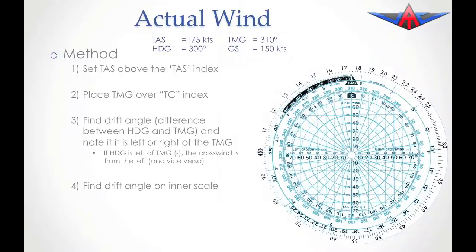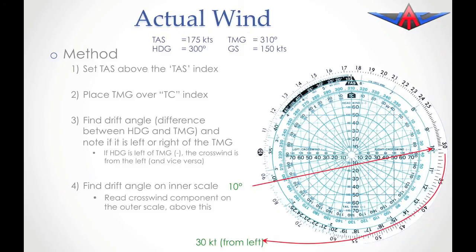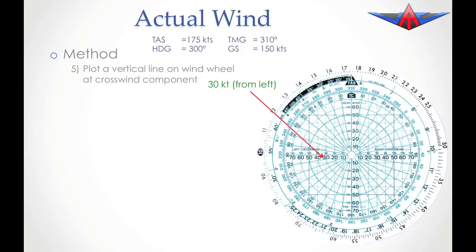We now find on the inner scale that 10 degrees of drift gives us a crosswind of 30 knots. Because it was on the left hand side, it's 30 knots from the left. So we're now going to position a crosswind from the left by drawing our line at the 30 knot mark, which has just been drawn in blue.